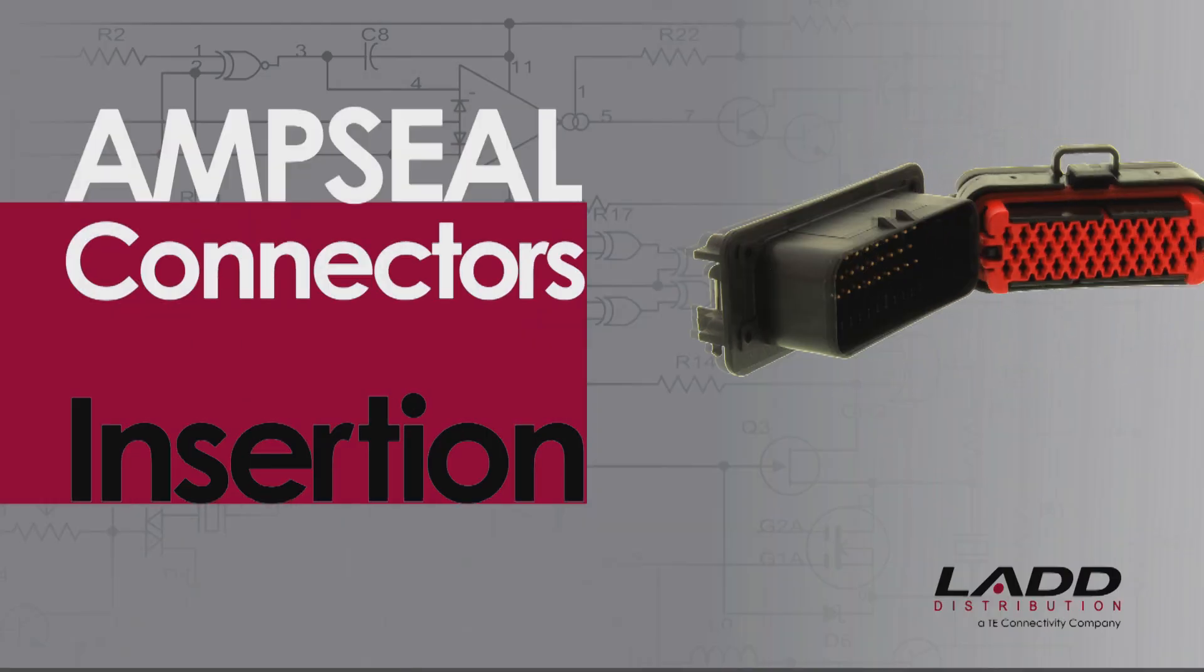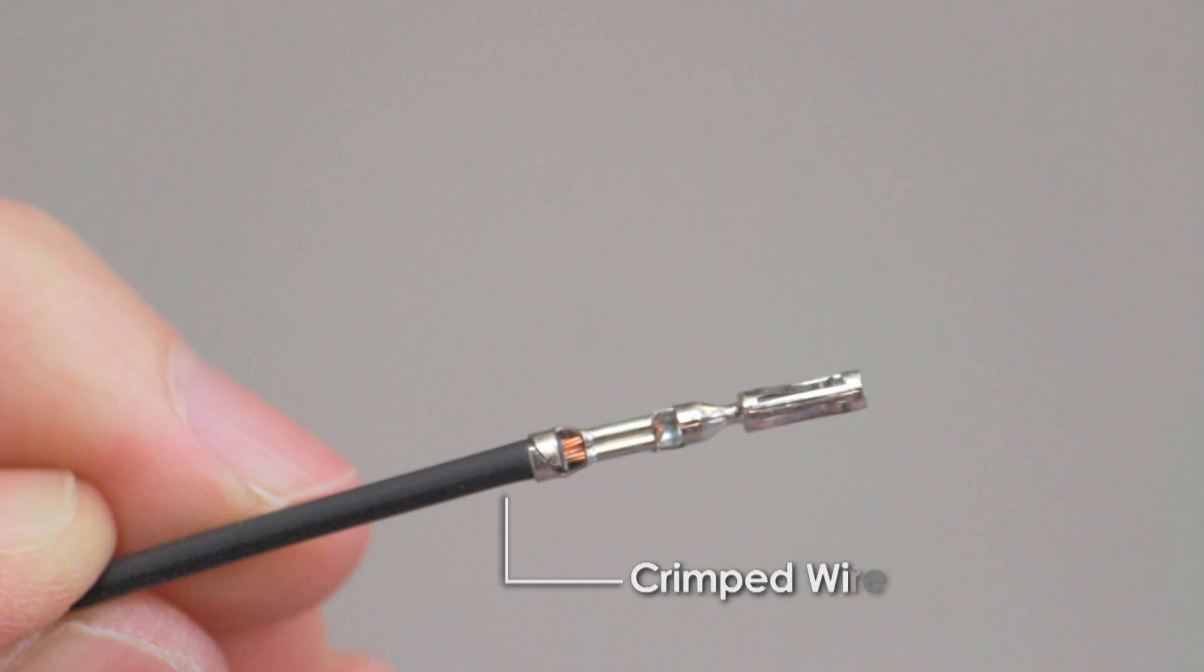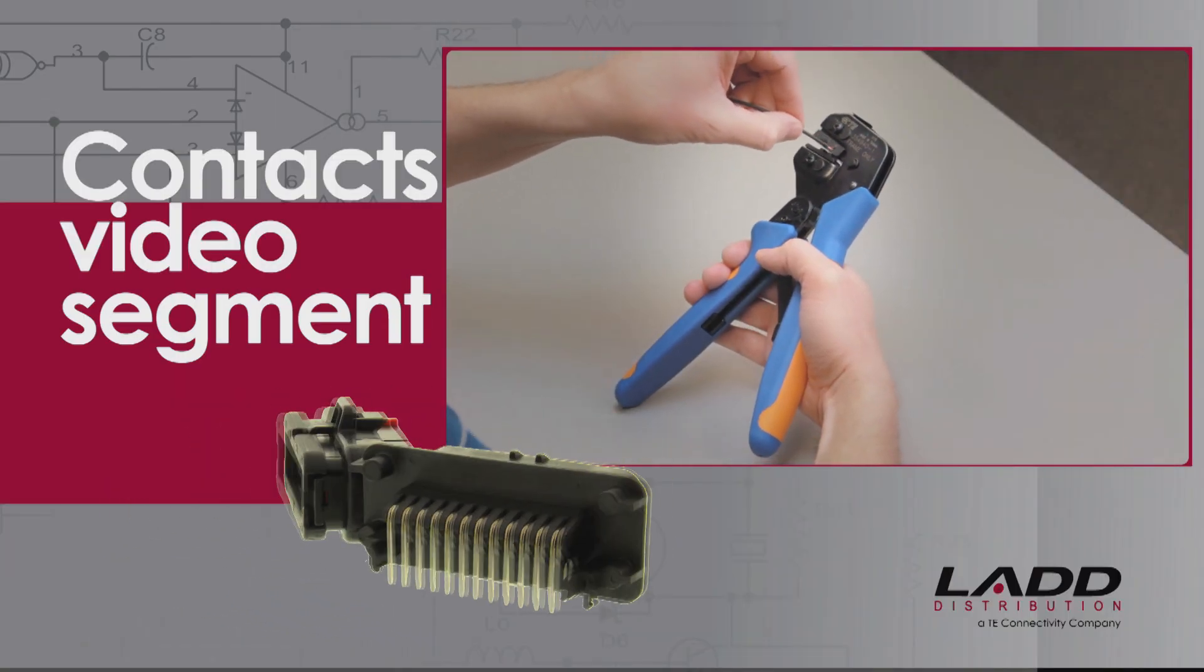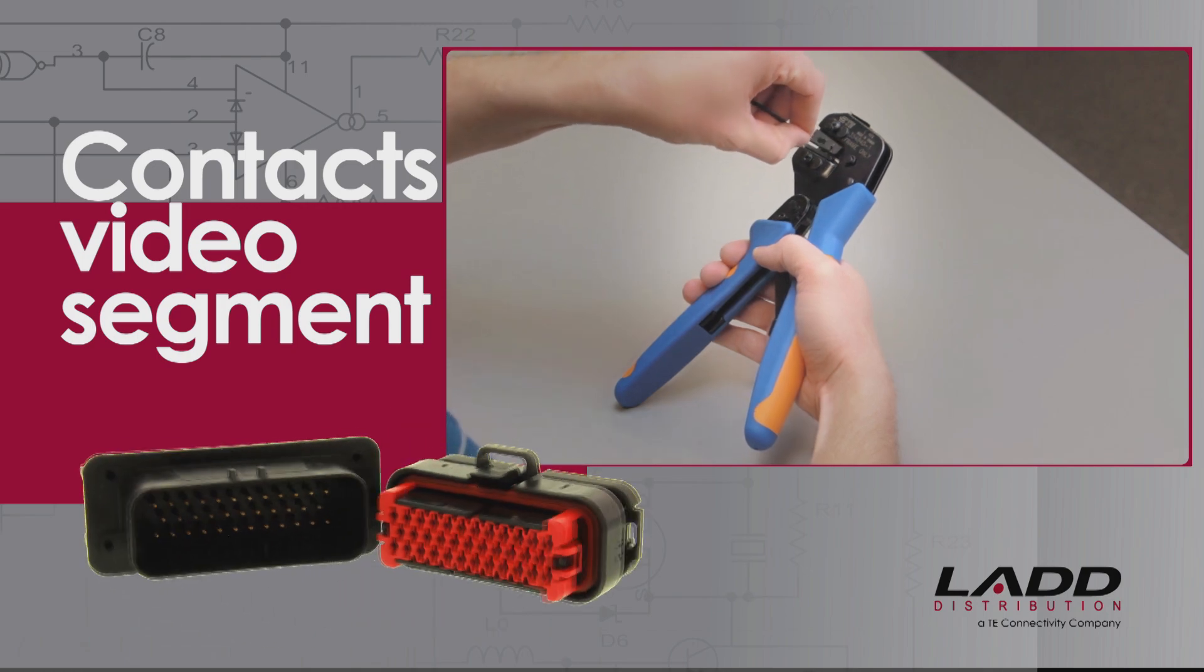Amp Seal Contact Insertion. Begin with a crimped wire. For assistance, refer to the Amp Seal Contacts video segment for detailed instructions.